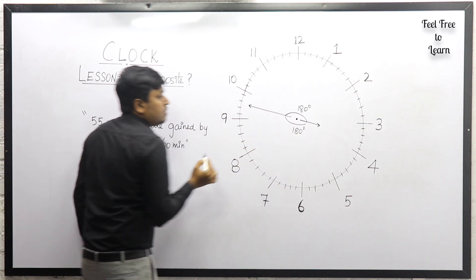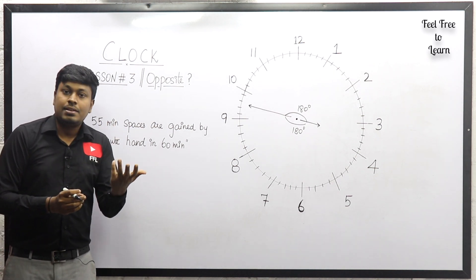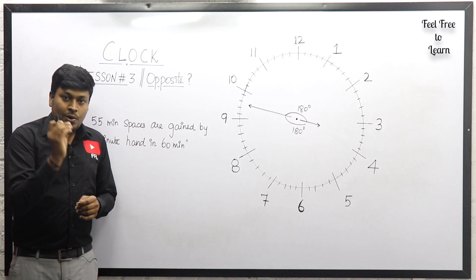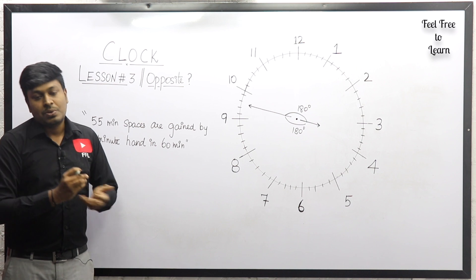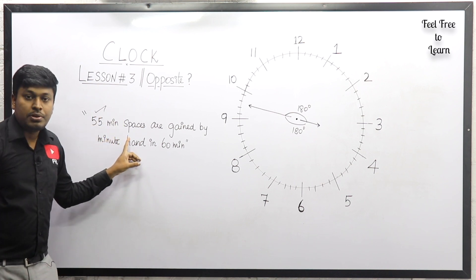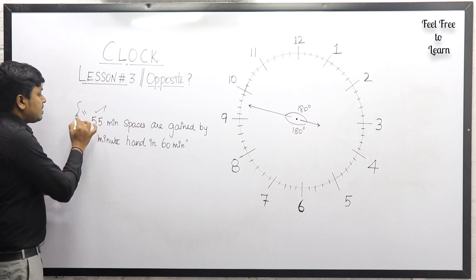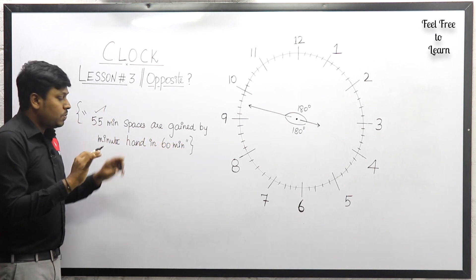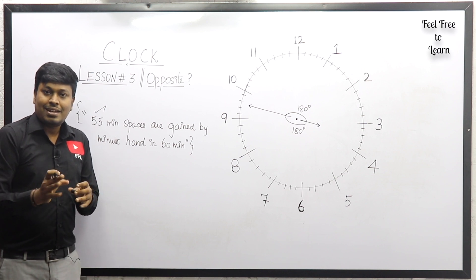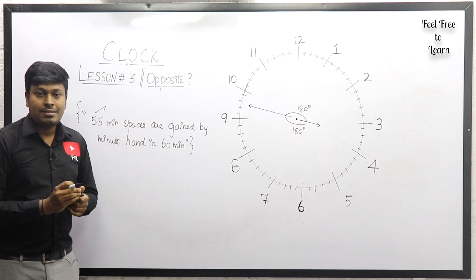So we need to find at what time the hands of the clock will be in opposite direction. Without watching lesson number two you can't understand this lesson, so kindly watch lesson two first. In lesson three we apply the same logic from lesson two: 55 minute spaces are gained by the minute hand in 60 minutes. Never forget this sentence. If you learn lesson two, this lesson and upcoming lessons will be easy.